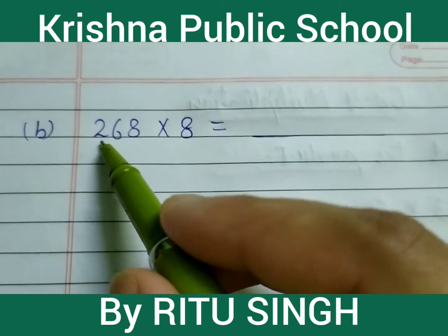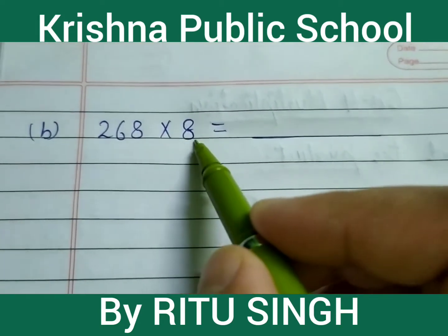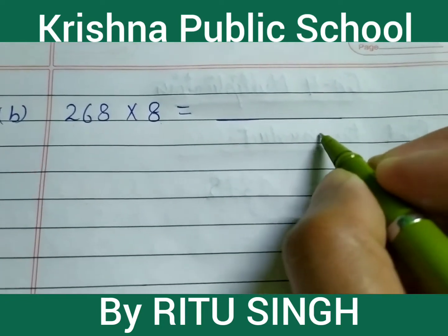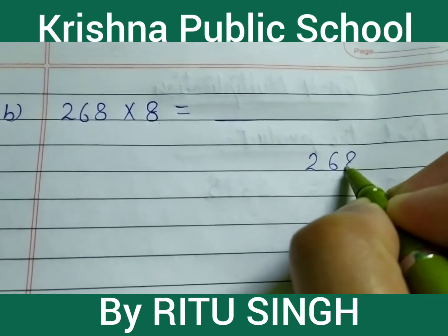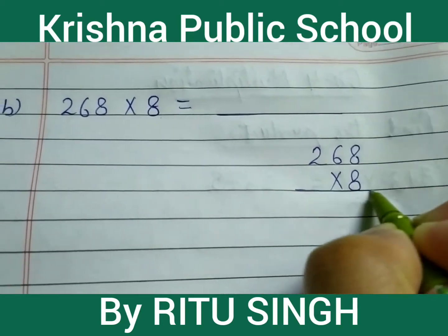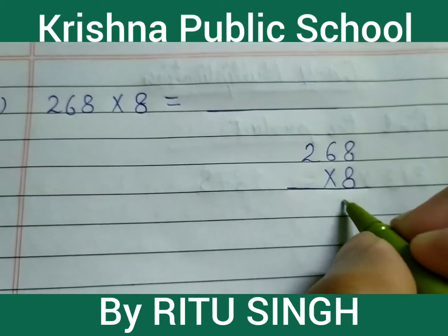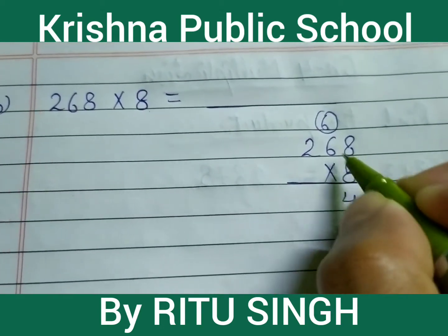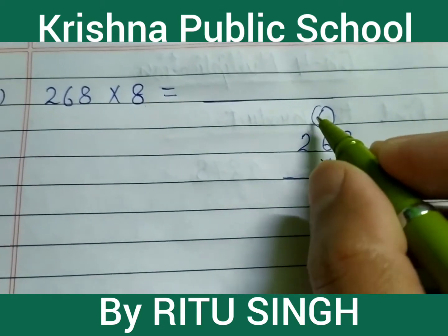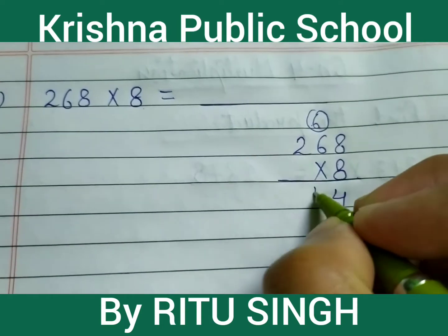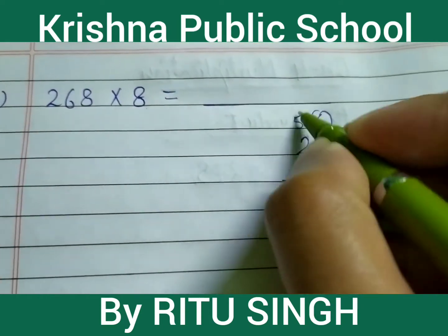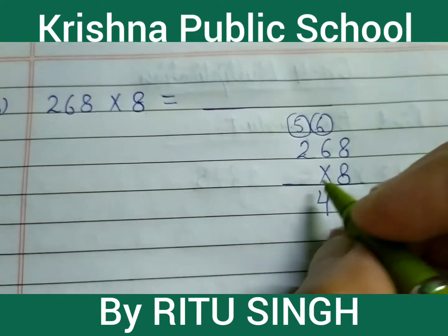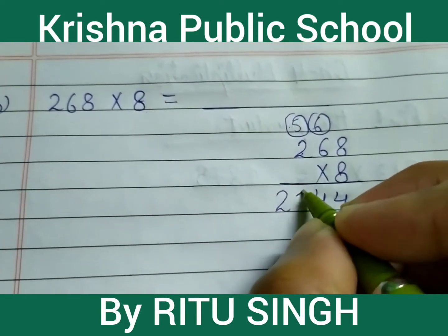Next question: 268 multiply by 8. 8 into 8 is 64 — write 4, carry 6. 8 into 6 is 48, add 6 is 54 — write 4, carry 5. 8 into 2 is 16, add 5 is 21 — write 21. Your answer is 2144.